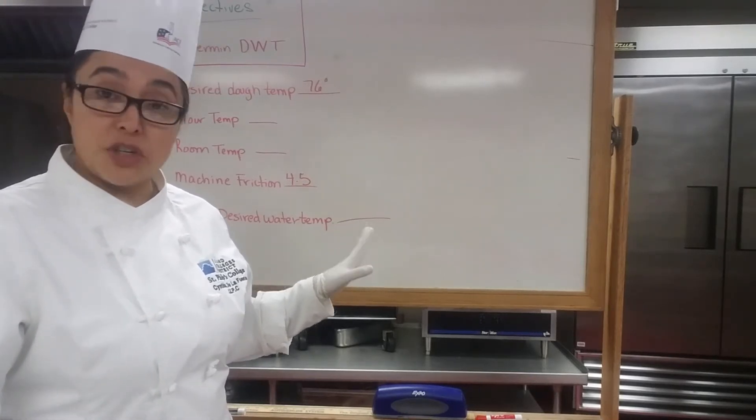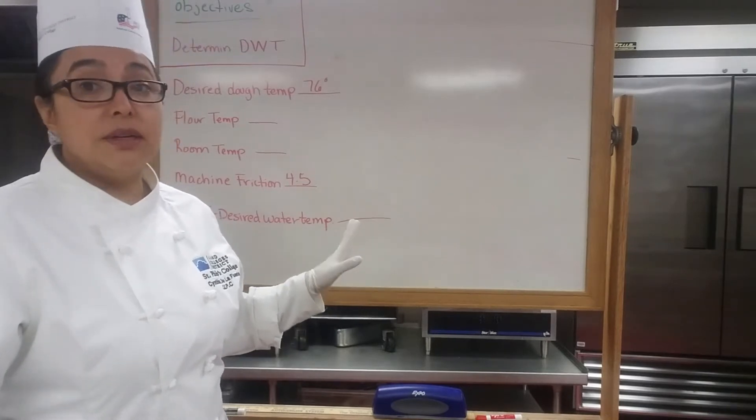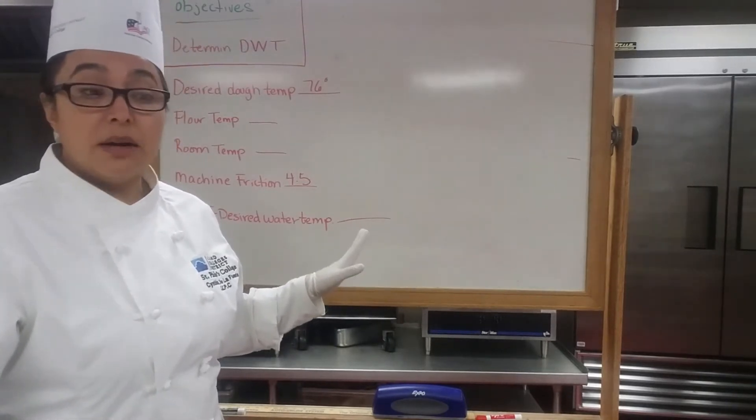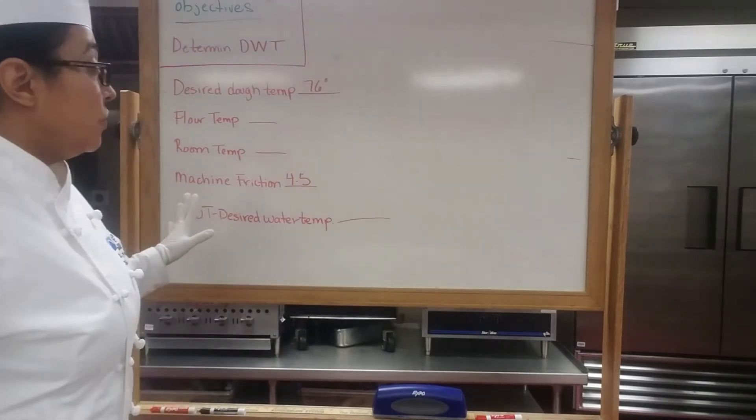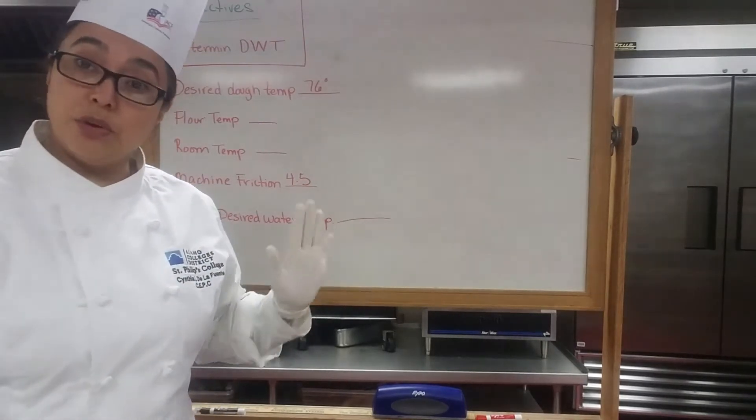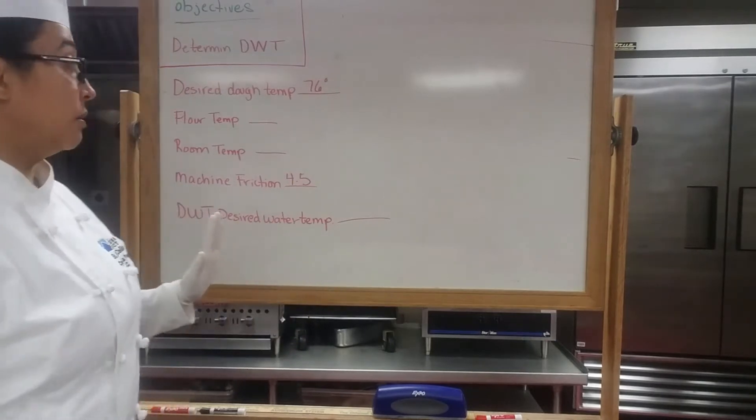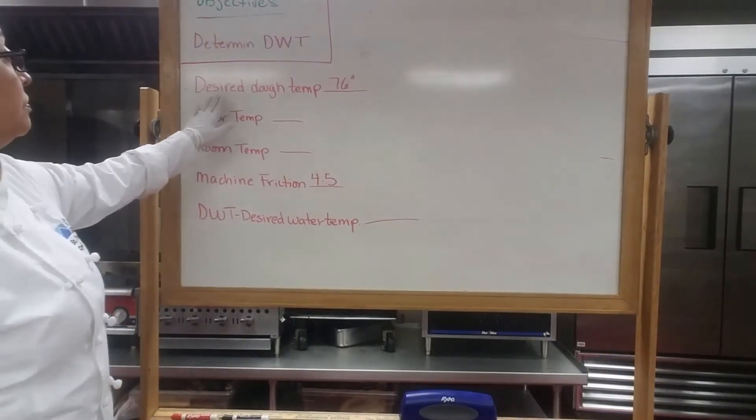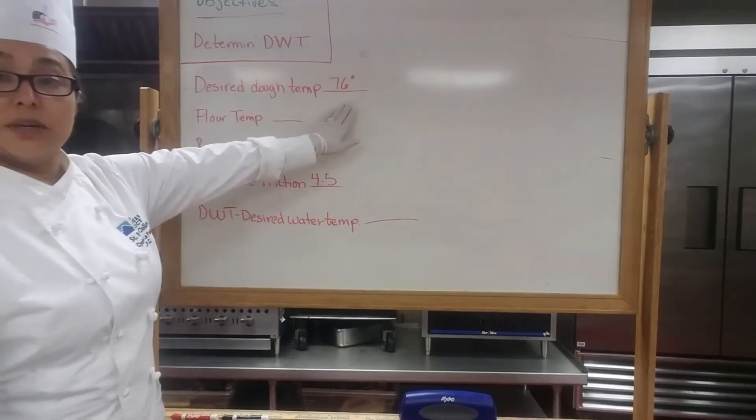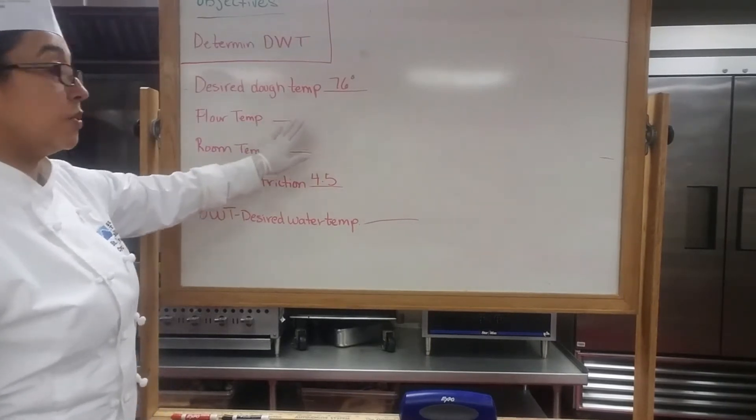Before we can begin our bread, we need to use what we've already calculated as far as our machine friction and use it to determine our desired water temperature. You have a worksheet, so pull your worksheet out so you can follow along, but I have everything here on the board for you as well. Our desired dough temperature is 76—that's always going to be given to you from me.